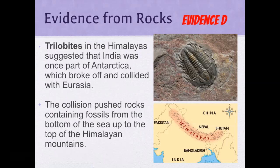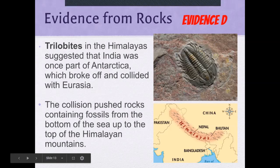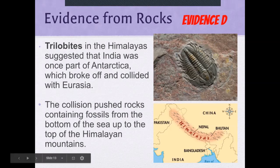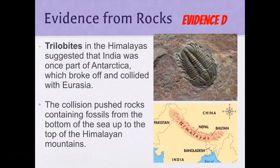Trilobites found in the Himalayas suggest that India was once part of Antarctica, which broke off and collided with Eurasia. Notice that the Himalayas are landlocked, yet trilobites are ocean organisms. How would they end up on top of mountains unless colliding tectonic plates pushed the fossils up out of the water?